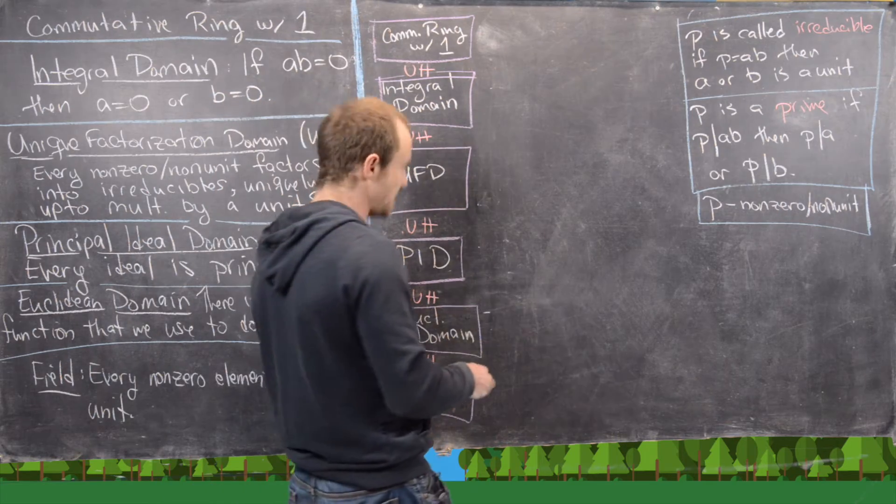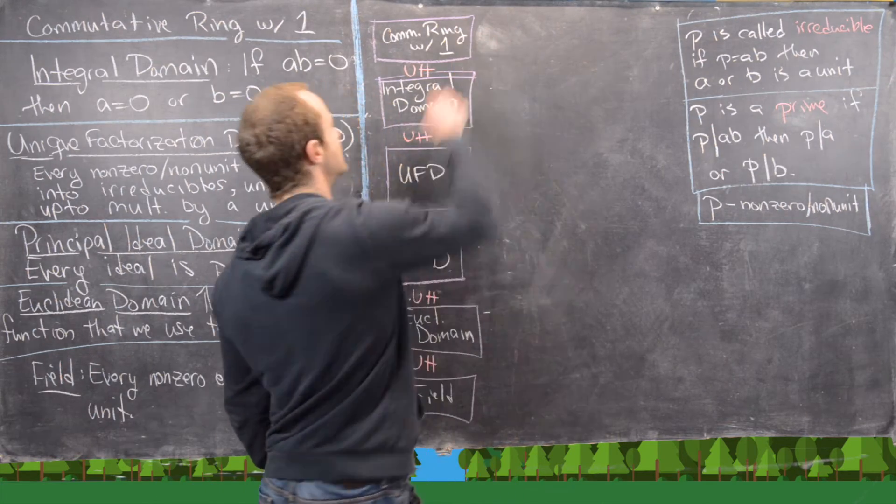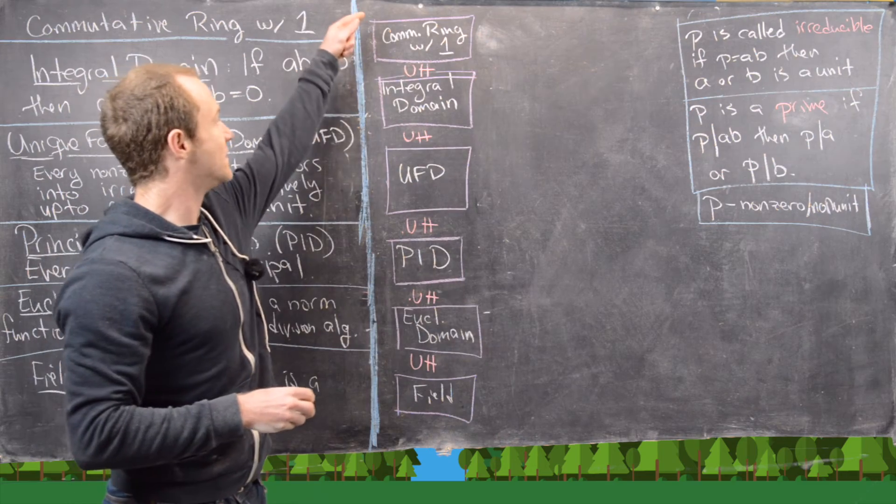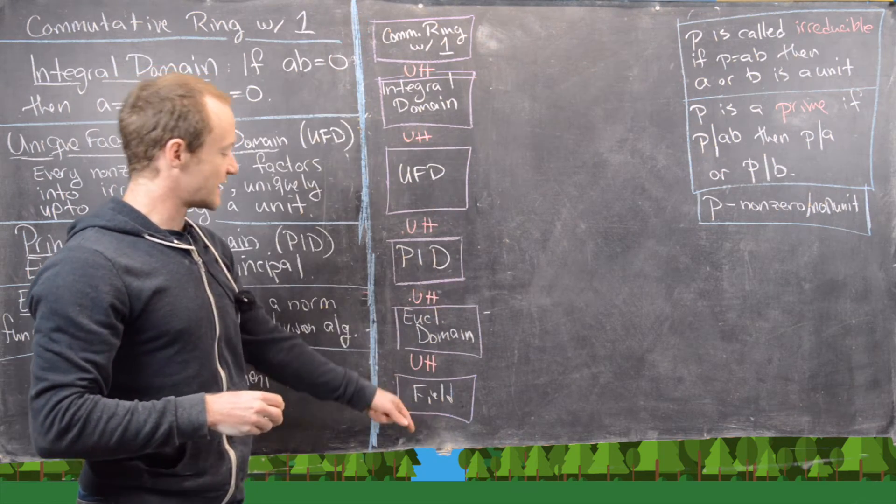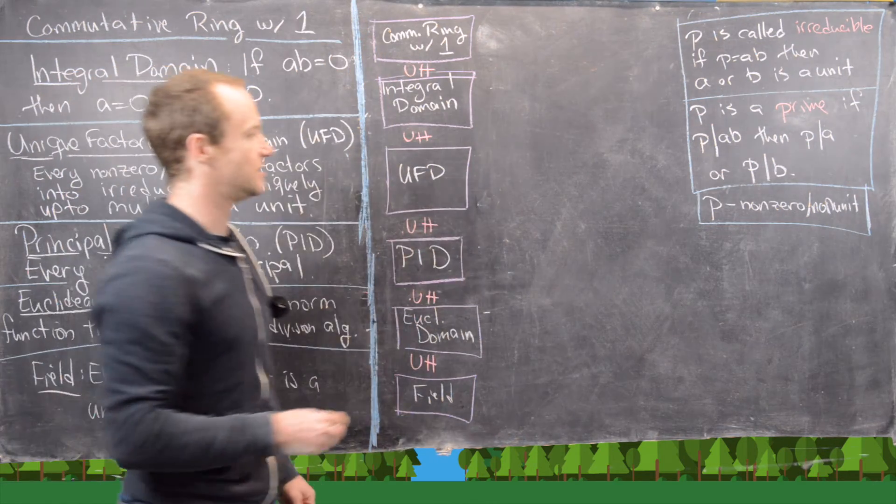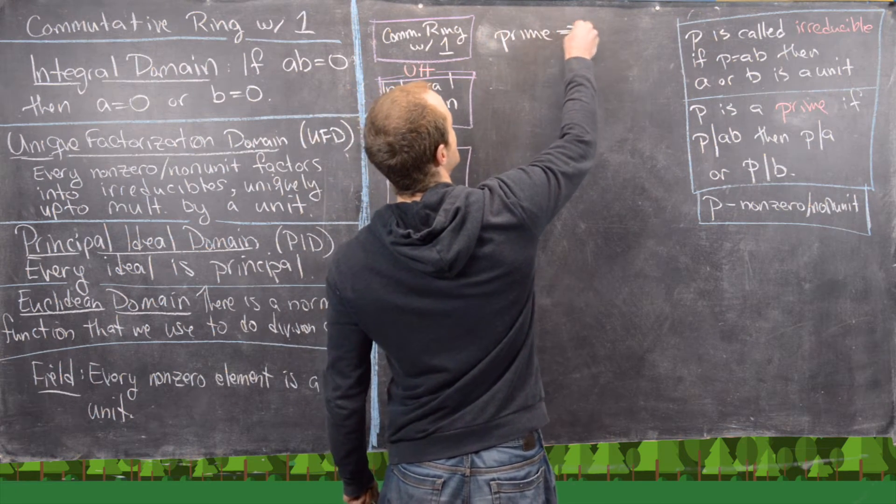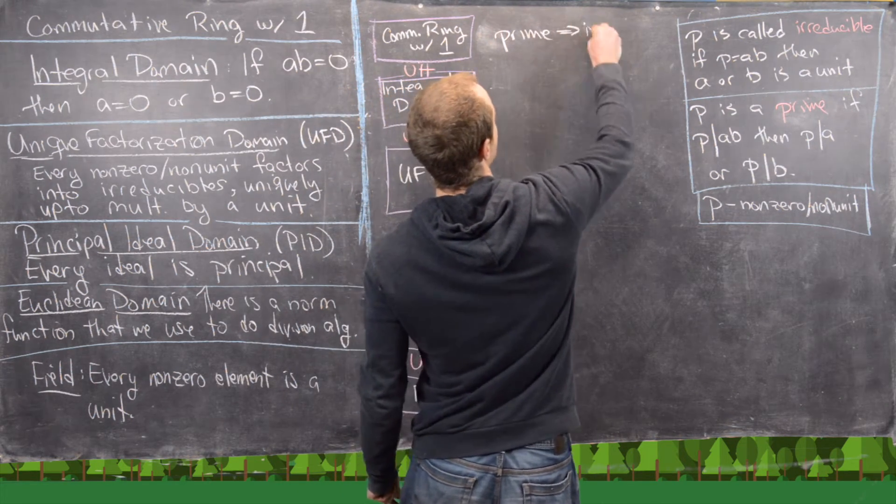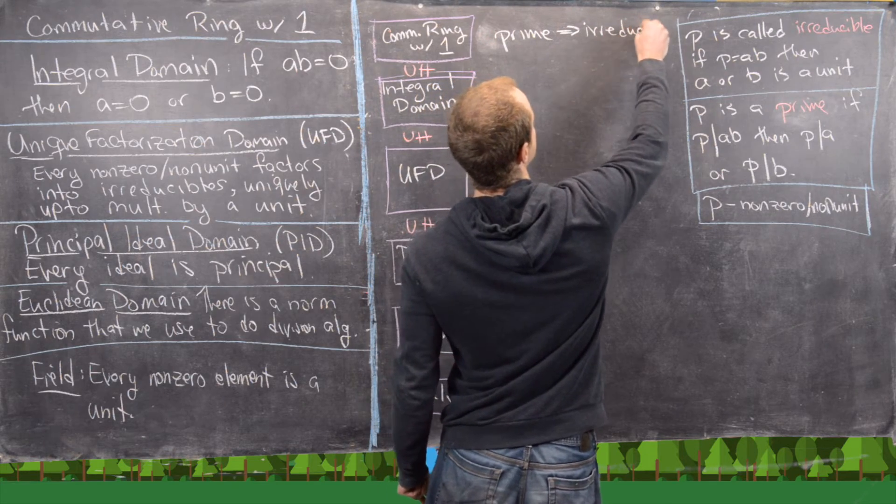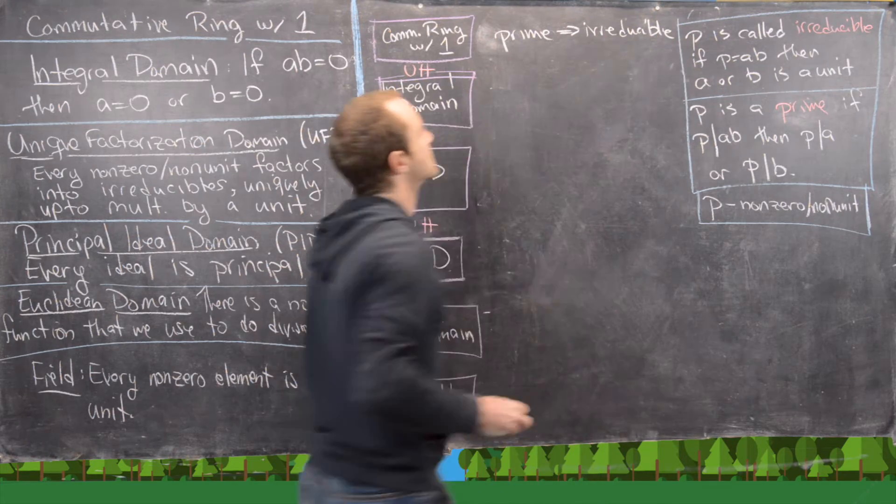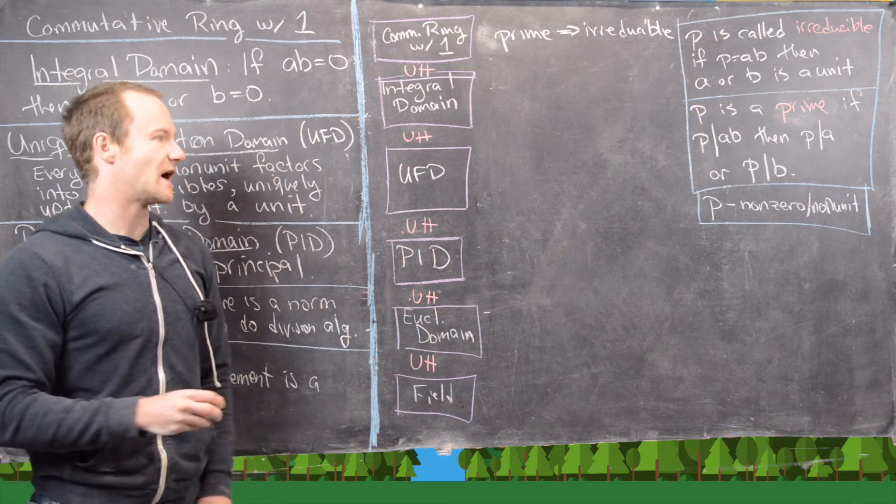And now I want to go up here and notice that in commutative rings with one, and thus in all of the rest of these, because all of these are commutative rings with one, we have this property that prime implies irreducible.